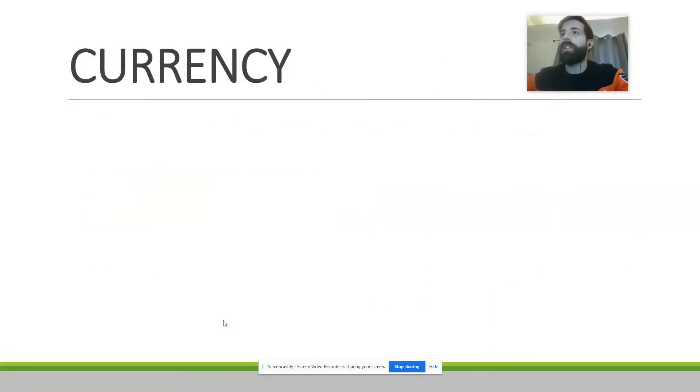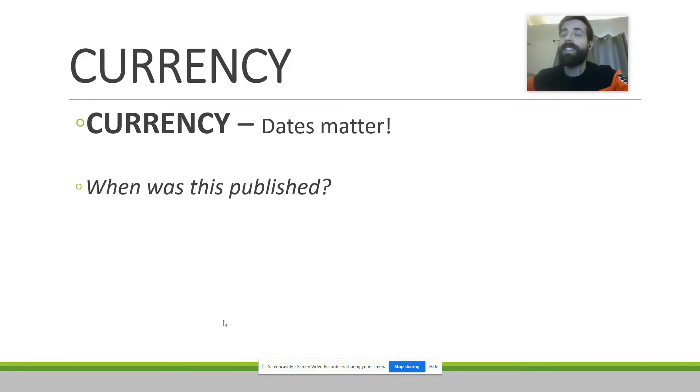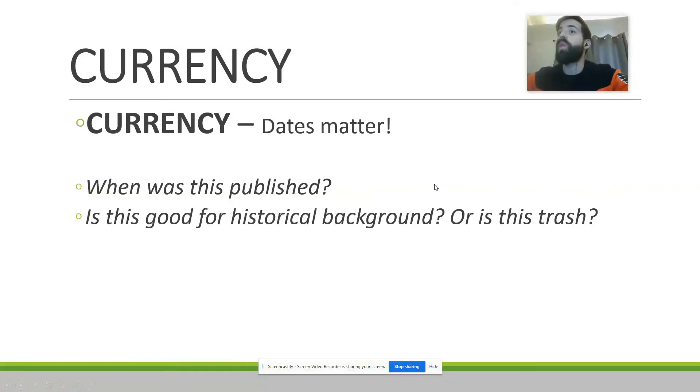Next one we've got is currency. And by that I don't mean money. What I mean is, is it current? Because dates matter, right? Is this information published recent enough for it to matter? Is this good for historical background? What did we think about gay marriage in the early 2000s, late 1990s versus today? Those two are very, very different things, right? And so maybe getting some of that historical background about what the LGBTQ community went through could be interesting information, but it's not going to be a great representation of where we're at currently with LGBTQ rights.